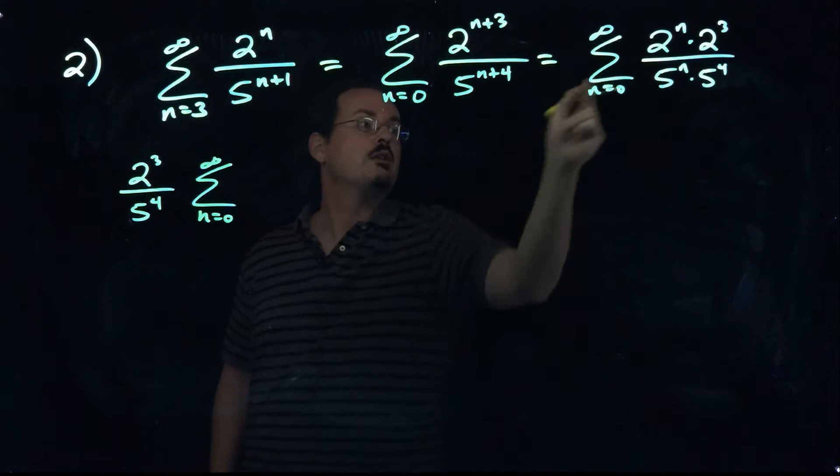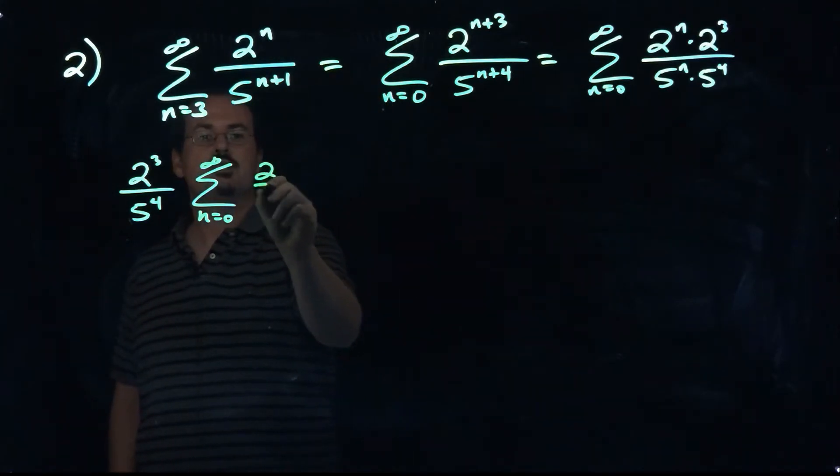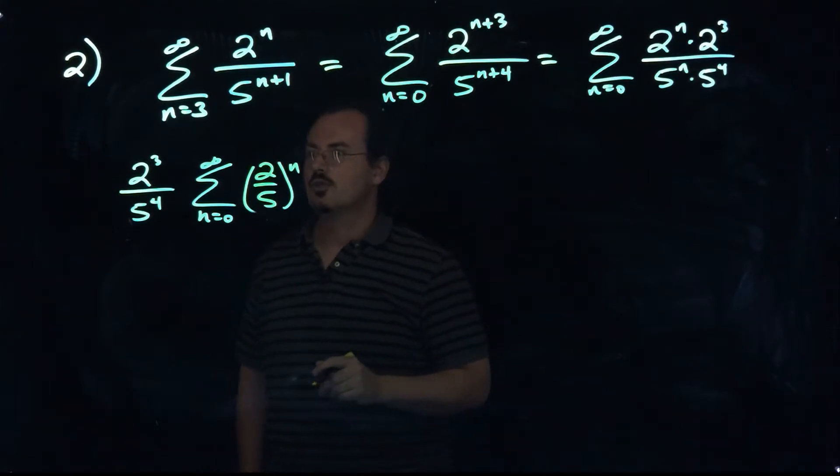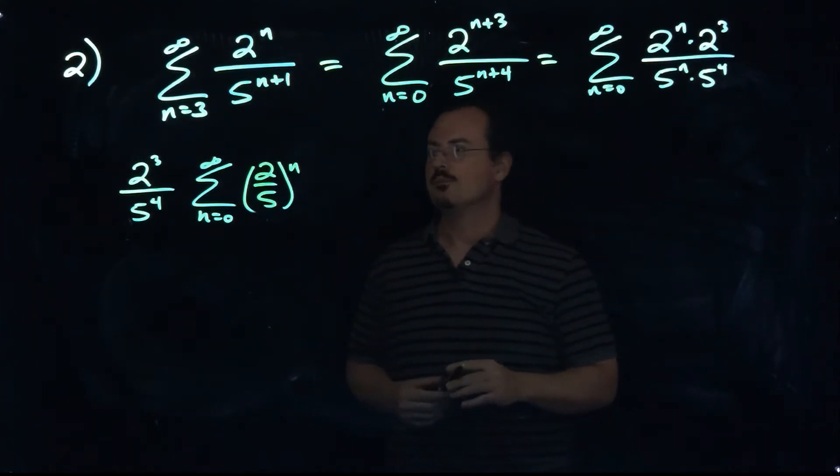And now we've got left two to the n over five to the n, that's the same as two-fifths to the n power. And now we've got this in the form that we need it to be for using that formula.